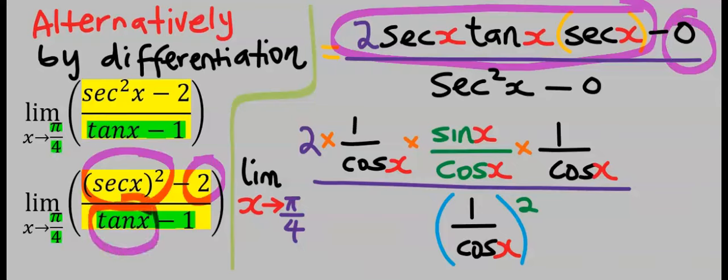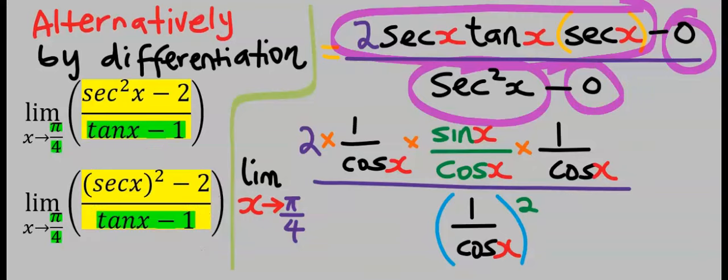Differentiate tan x, and your answer is sec squared x. Differentiate 1, and your answer is 0.